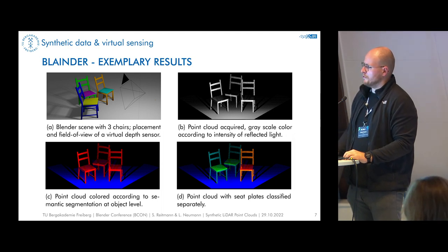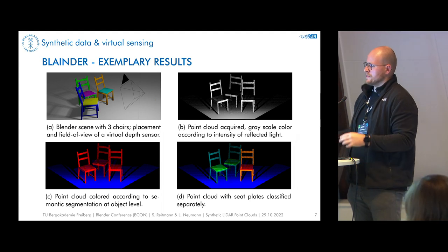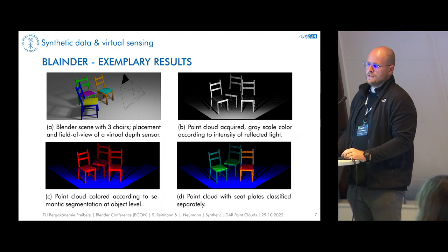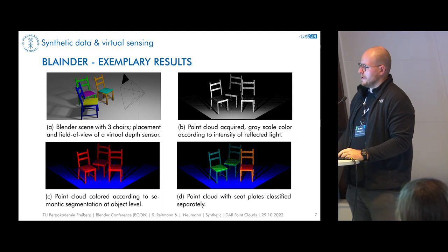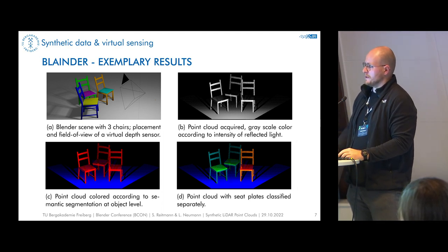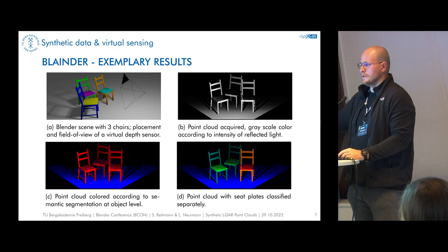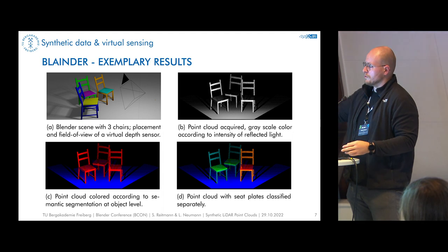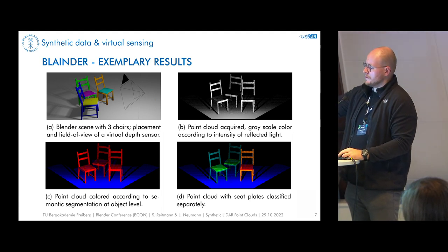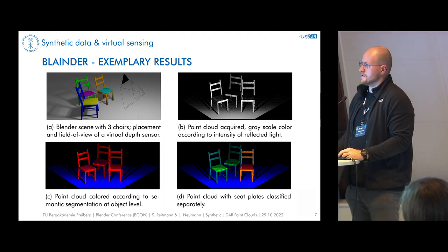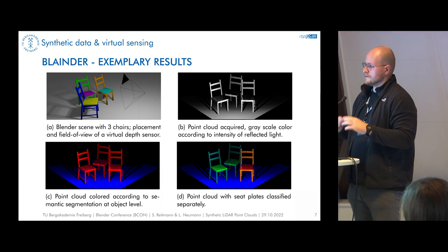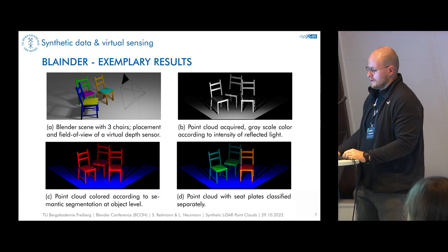Our add-on in image C can use the labels we defined, attach them to the individual points, and pipe them into the output file. Or we can do part segmentation in image D, using the different part IDs, and pipe those into the output file. This labeled data is what we give to the AI model to train on — it sees the raw point cloud in B and learns the differences shown in C and D. This is the creation process for labeled point cloud training data.